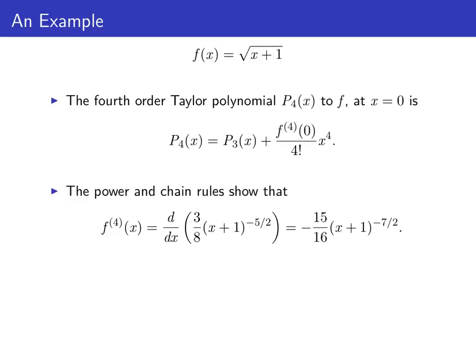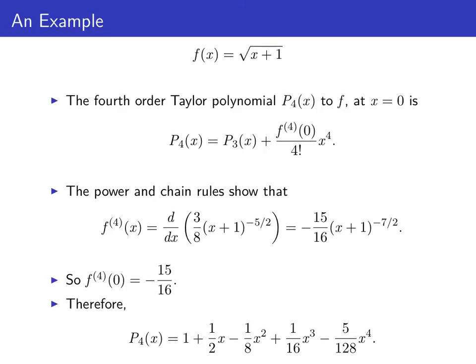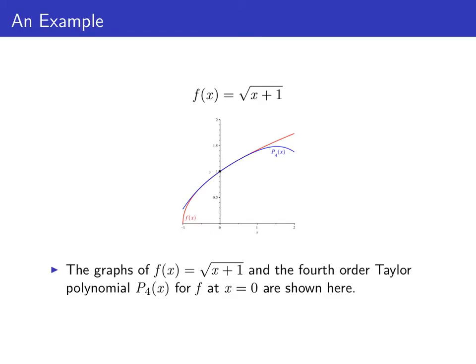Differentiating the third derivative of f gives us the fourth derivative: f⁽⁴⁾(x) is negative fifteen sixteenths times (x+1) to the negative seven halves power. So the fourth derivative of f at zero is negative fifteen sixteenths. This makes p₄(x) equal to p₃(x) minus fifteen sixteenths divided by four factorial times x to the fourth. So p₄(x) = 1 + (1/2)x − (1/8)x² + (1/16)x³ − (5/128)x⁴. The fourth order Taylor polynomial molds around the graph of f more closely than the earlier Taylor polynomials, at least if we stay close to x = 0.